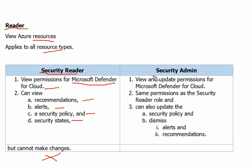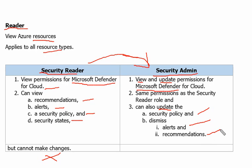The next one is Security Admin. Security Admin has all the Security Reader capabilities, meaning it can view. But furthermore, the Security Admin role can also update permissions for Microsoft Defender for Cloud, update the security policy, and dismiss alerts and recommendations. So Security Admin has more security-related permissions overall.